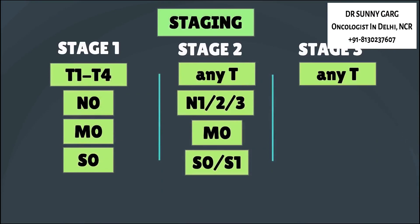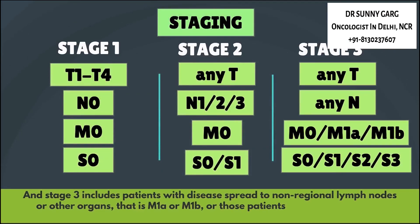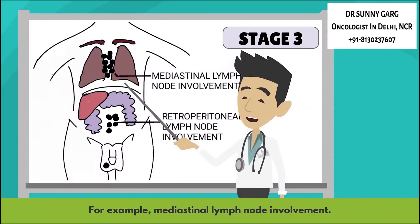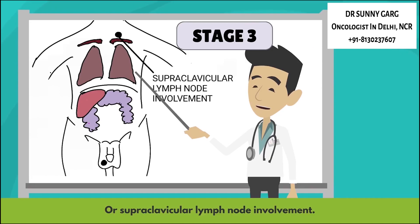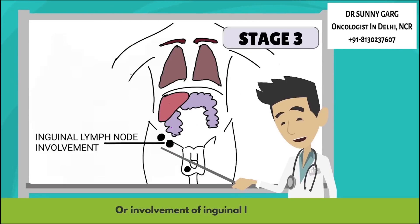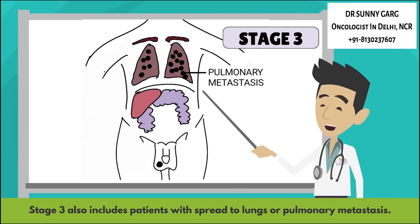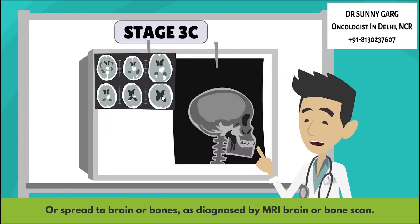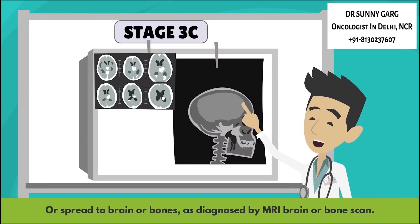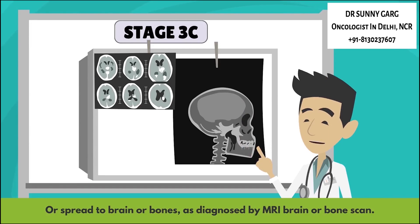Stage 3 includes patients with disease spread to non-regional lymph nodes or other organs — that is M1A or M1B — or those with highly elevated markers, that is S2 or S3. Examples include mediastinal, supraclavicular, or inguinal lymph node involvement. Stage 3 also includes patients with spread to the lungs (pulmonary metastasis), liver, brain, or bones as diagnosed on MRI brain or bone scan.